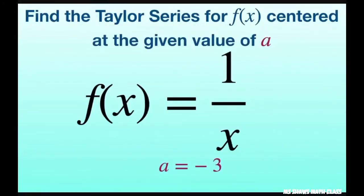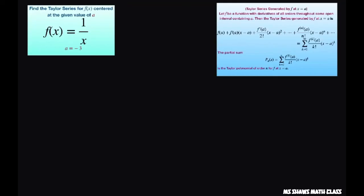Hi everyone! We're going to find the Taylor series for f of x equals 1 divided by x, centered at the given value of a equals negative 3. So let's go ahead and get started. We're going to write it in this form, so we need to crank out some derivatives.